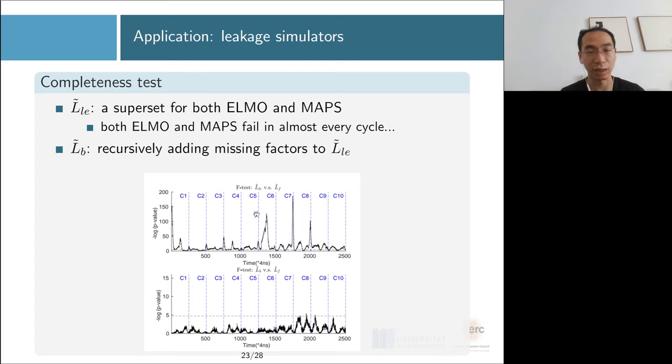We can recursively add the missing factors. This is a manual effort finding the missing factor and adding it to the linear extended model. Then we get the currently best model we can possibly get. This model is much better than the linear extended model, but still we are missing a little bit here and there. We don't really know what causes that.